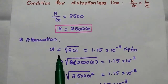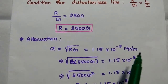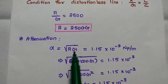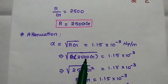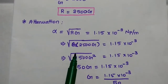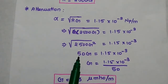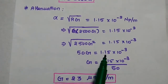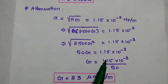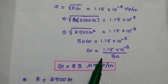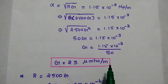The attenuation constant alpha is equal to 1.15 × 10⁻³ neper per meter. The formula is alpha equals square root of R times G. Substituting R as 2,500 G, we get square root of 2,500 G squared. Taking the square root, it becomes 50 G equal to 1.15 × 10⁻³. Moving 50 to the denominator, we get G equal to 23 micromho per meter.